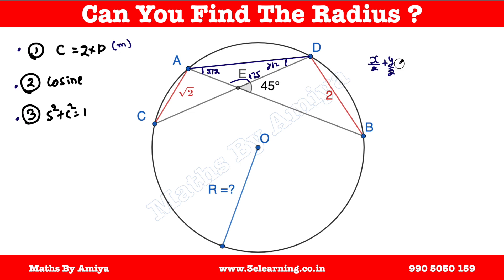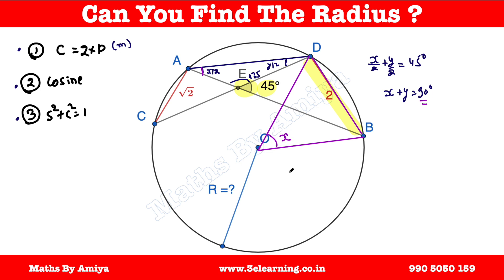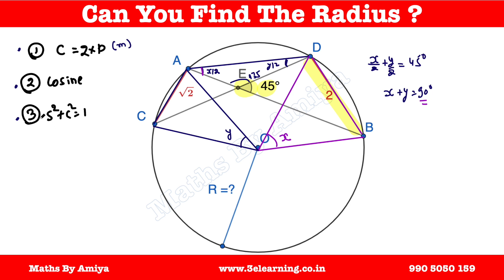So x/2 + y/2 = 45°, which means x + y = 90°. Using the inscribed angle theorem, if you have two chords meeting at 45°, then the central angles subtended by both chords sum to 90°. Angle A is formed by chord BD. So if this arc gives angle x/2, the corresponding central angle is x/2 on both sides. Similarly, the angle involving chord AC gives y/2 on both sides. So y = 90° − x.